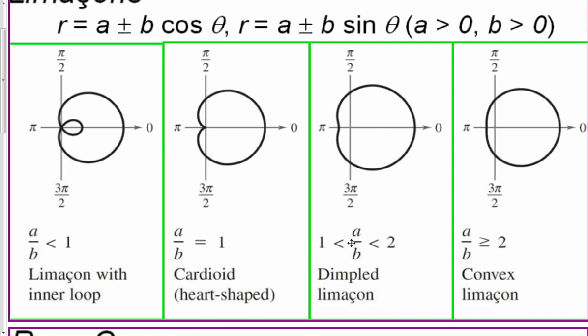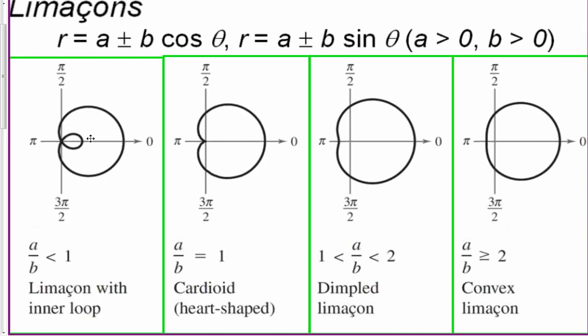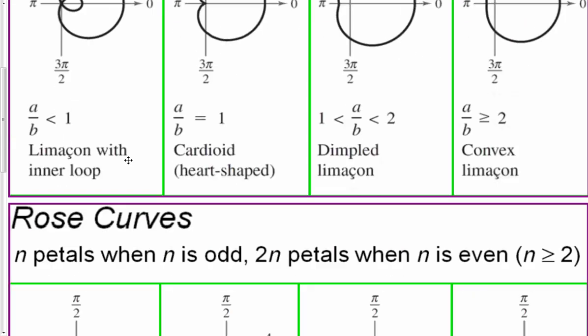And then 1 less than a over b less than 2, so between 1 and 2 it's pretty close. And if a over b is greater than or equal to 2, where a is this constant and b is the plus or minus b cosine of theta or sine, right? Both of them need to be positive. Now don't worry about these patterns. We're just going to see a couple, we'll graph one or two, and it'll be pretty straightforward.